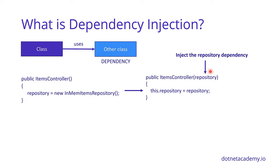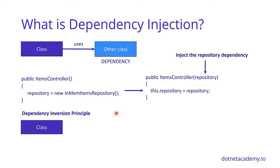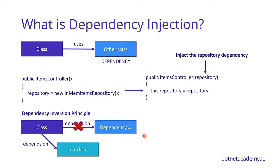So what is dependency injection? We have a class that wants to make use of some other class — we say that other class is a dependency. In our case, the items controller is constructing a new instance of InMemItemsRepository in its constructor. What we really want to do is flip things: instead of the controller constructing an instance, we'll receive the repository in the constructor and take that reference into the class. That is dependency injection — injecting the dependency into the class.